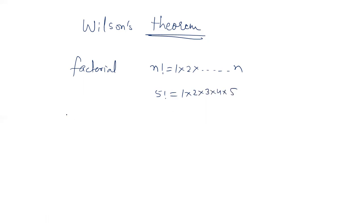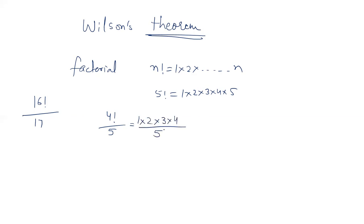The question is: what is the remainder when 16 factorial is divided by 17? Before I explain this, let me give you a smaller number. For example, 4 factorial divided by 5. Now, 4 factorial divided by 5 is 1 × 2 × 3 × 4 divided by 5. So 4 × 3 is 12, 2 × 12 is 24, divided by 5. And 24 divided by 5 gives a remainder of 4.